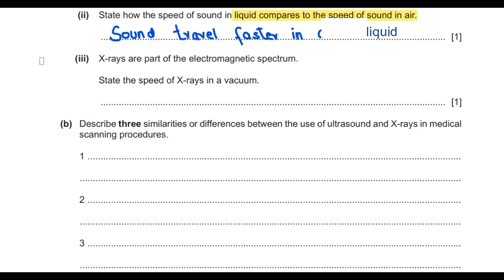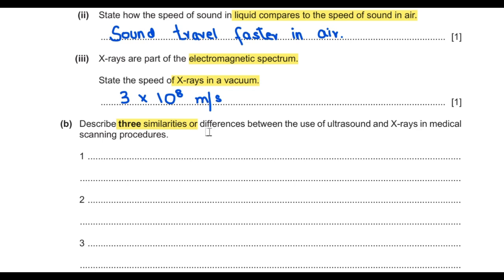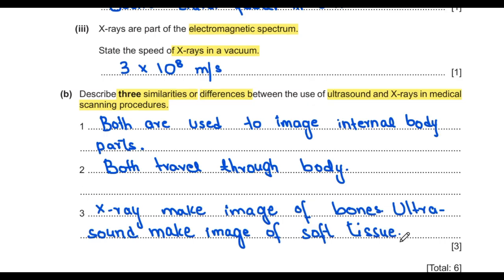The third part says X-rays are part of the electromagnetic spectrum. State the speed of X-rays in vacuum: 3 × 10⁸ metres per second. Part B asks to describe three similarities or differences between ultrasound and X-rays in medical scanning. Both are used to image internal parts of the body, and both travel through the body. A key difference is that X-rays image bones while ultrasound images soft tissues.